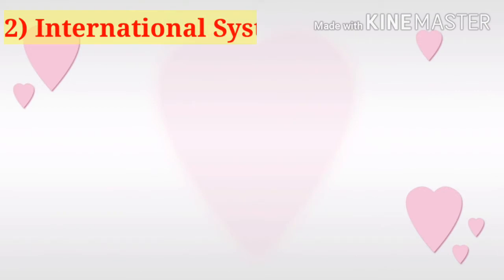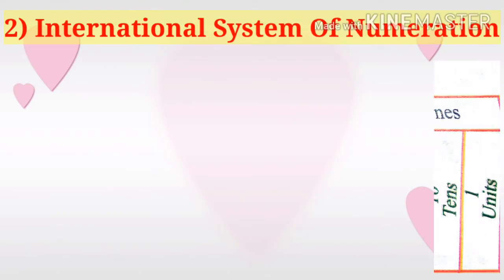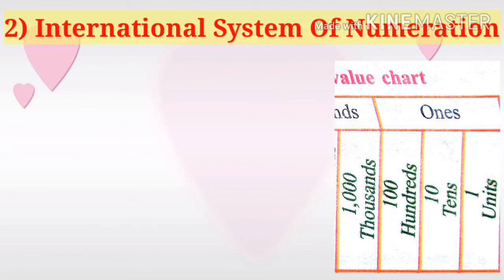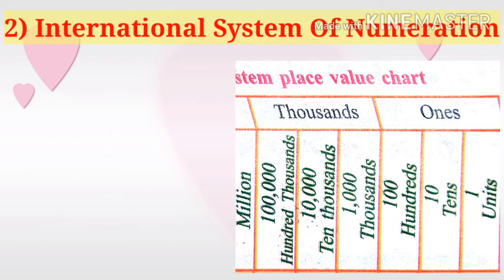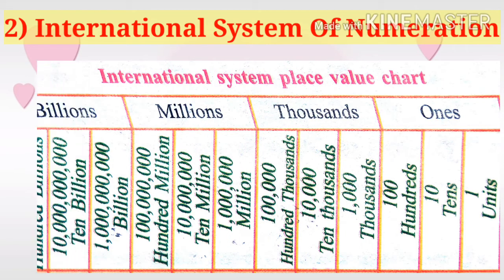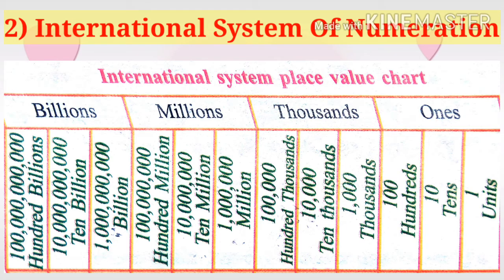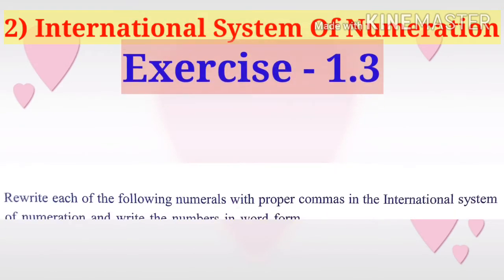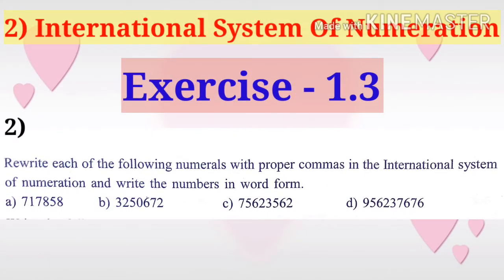This is the Hindu system of numeration. The next is the International system of numeration. In this there are four parts: ones, thousands, millions, and billions. In units: tens, hundreds. In thousands: thousands, ten thousands, hundred thousands. In millions: million, ten million, hundred million. In billions: one billion, ten billion.